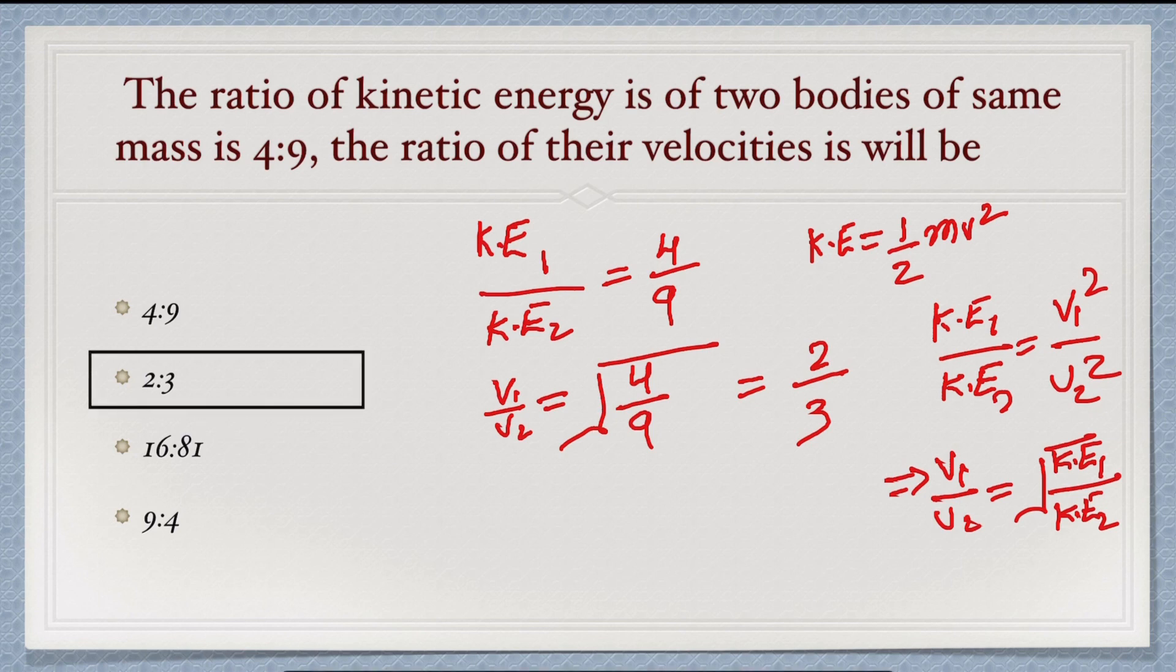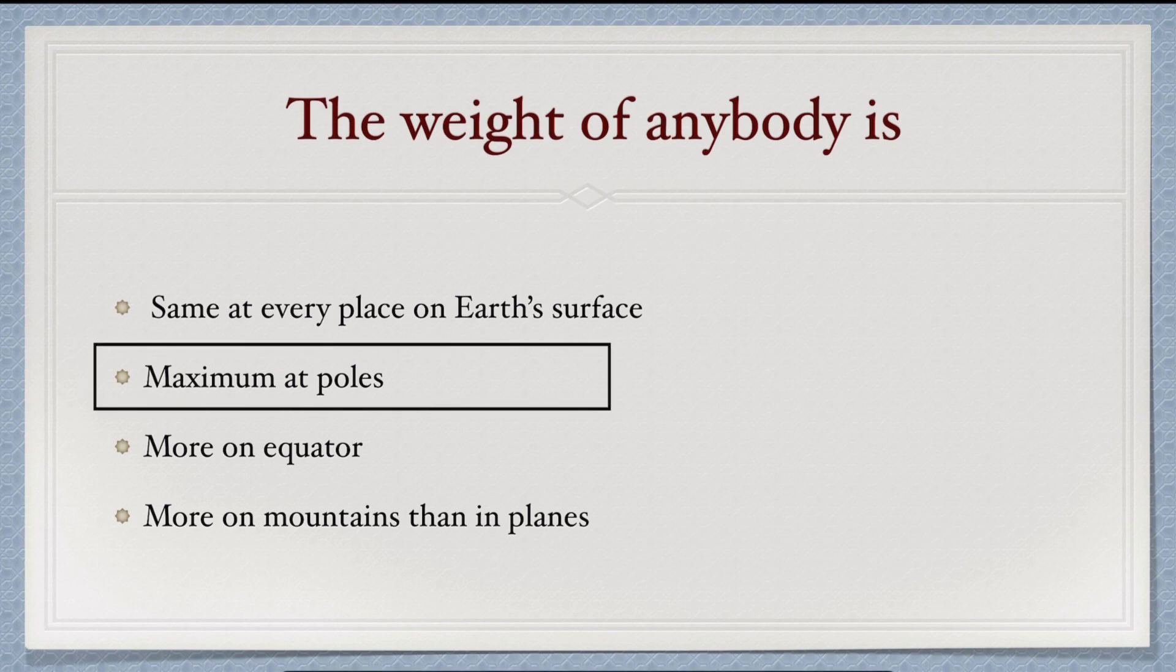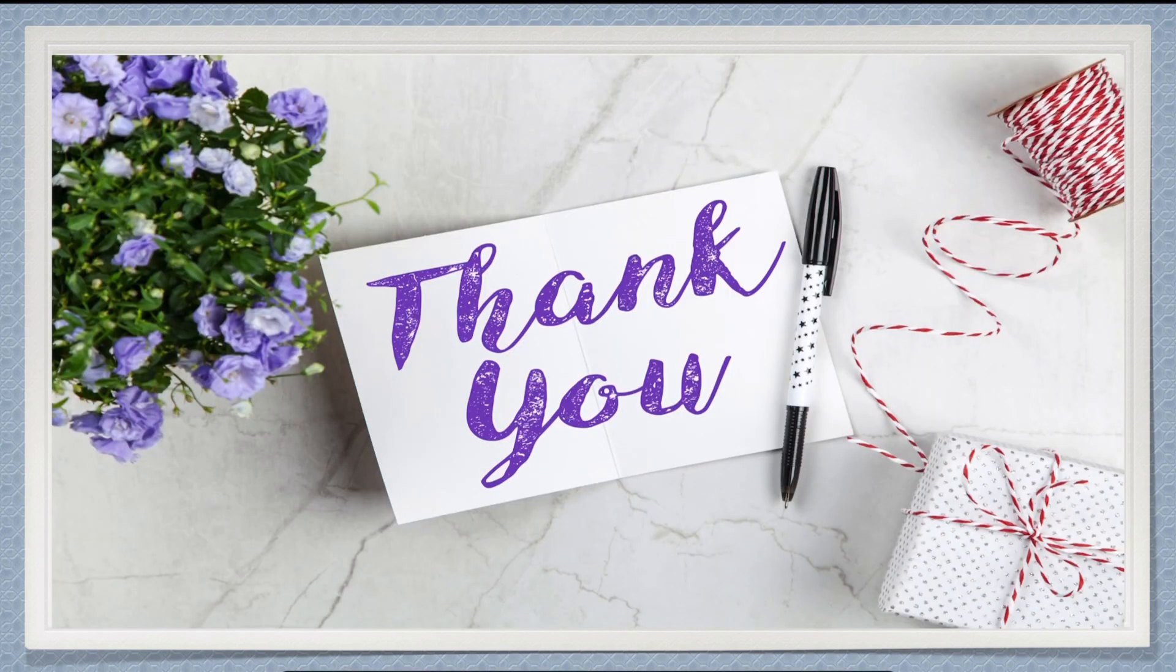Next question: the weight of anybody is what? The weight is maximum where the value of gravity is maximum. The value of gravity is maximum at the poles, not at the equator. So the weight will be maximum at the poles. I hope you liked my video. Please subscribe to my channel and share it with your friends. Thank you so much.